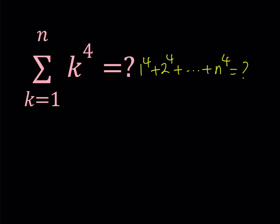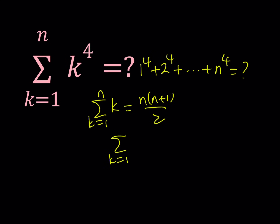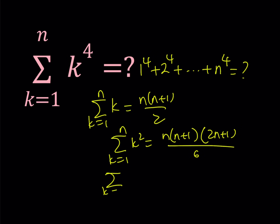We do know that the sum of k from k=1 to n is n times (n+1) divided by 2. The sum of the squares is n times (n+1) times (2n+1) divided by 6. And for the sum of cubes, that's also very commonly used — it's interesting because the sum of the cubes is just that same formula squared.